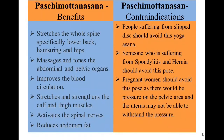Paschimottasana benefits: Stretches the whole spine, especially lower back, hamstrings, and hips. Massages and tones the abdominal and pelvic organs. Improves blood circulation. Stretches and strengthens the calf and thigh muscles. Activates the spinal nerves and reduces abdominal fat. Contraindications: People suffering from slipped discs, spondylitis, or hernia should avoid this asana. Pregnant women should avoid this pose as there would be pressure on the pelvic area and the uterus may not be able to withstand the pressure.